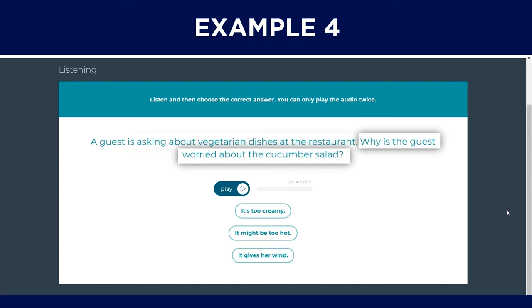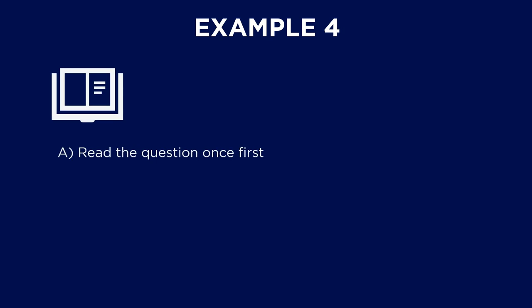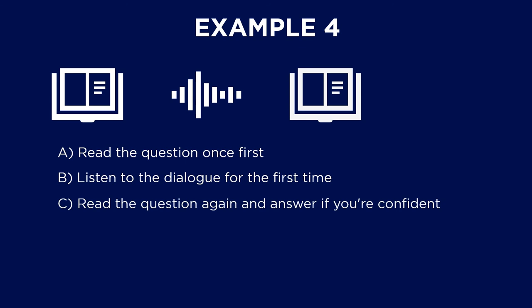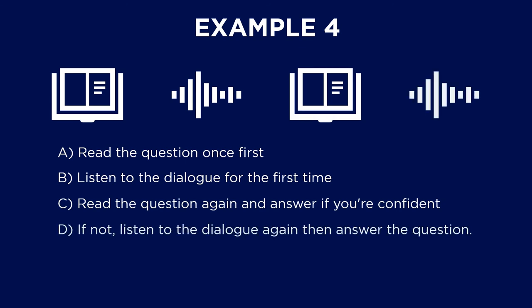The question being asked: why is the guest worried about the cucumber salad? From this question, we would know what to look out for when listening to the dialogue, and that is the cucumber salad. And in the question, there is the word worried, so there is a concern that the guest has regarding the cucumber salad. After doing this quick analysis, listen to the dialogue for the first time and you will have a clearer picture of the dialogue in your mind. So a good practice will be: read the question once first, listen to the dialogue for the first time, read the question again and answer if you are confident. If not, listen to the dialogue again and answer the question.